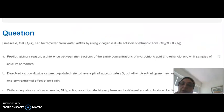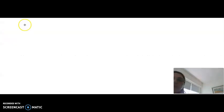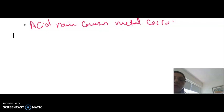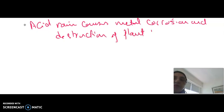Question 2. Dissolved carbon dioxide causes unpolluted rain to have a pH of approximately 5, but other dissolving gases can result in much lower pH. State one environmental effect of acid rain. We can say here that acid rain causes metal corrosion and destruction of plant life. And this would be enough for two marks.